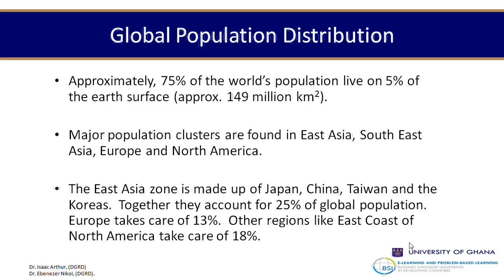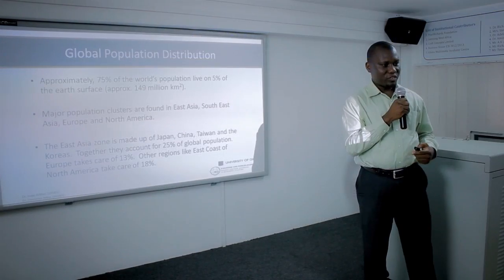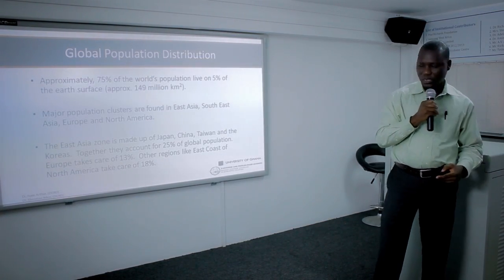The countries of East Asia — Japan, China, Taiwan, and the Koreas — account for 25 percent of the overall population in the world, followed by Europe. In North America, most of the population is concentrated on the East Coast — New York, New Jersey along that line — and also mostly on the West Coast in California.